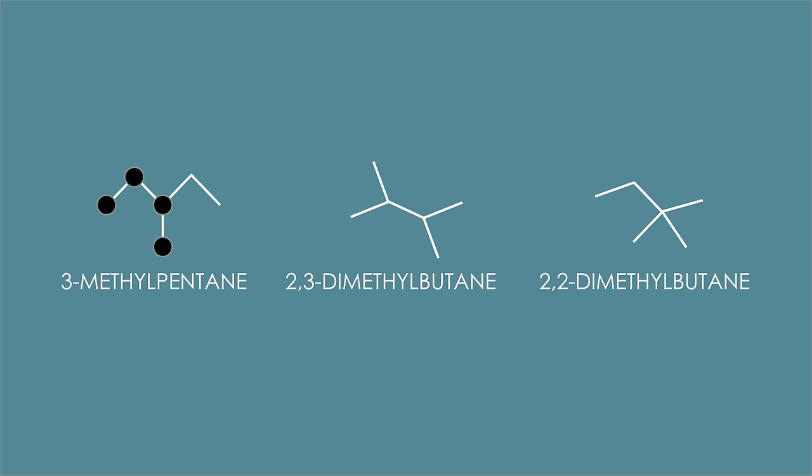Here's the other isomer based on pentane: 3-methylpentane. And there are two more structural isomers based on butane, with only four carbon atoms in the longest chain: 2,3-dimethylbutane and 2,2-dimethylbutane.